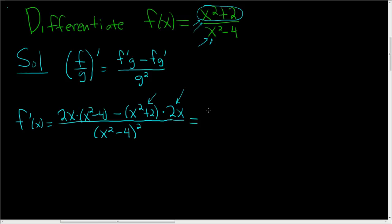Let's distribute and clean it up. So we get 2x cubed, because 2x times x squared is 2x cubed, then negative 8x minus 2x cubed minus 4x, all divided by x squared minus 4 quantity squared.